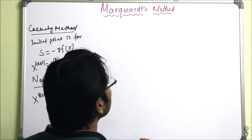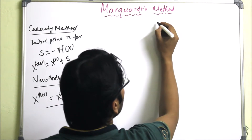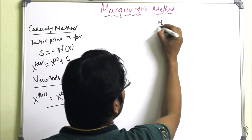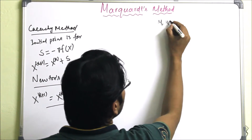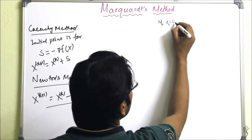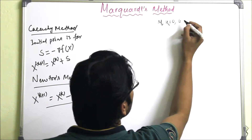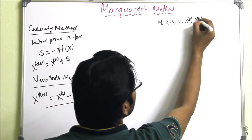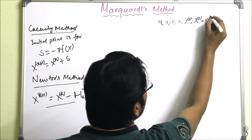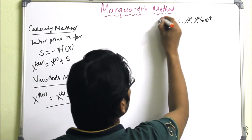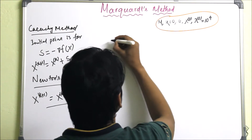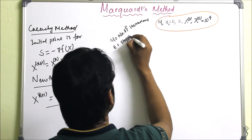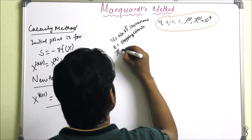Now we will see the steps of the Marquardt method. We define some variables: M is the number of iterations, K is the starting value initialized to 0, epsilon is the stopping criteria, X_0 is the initial value, and lambda_0 is a large number — we can take it as 10 to the power 4.